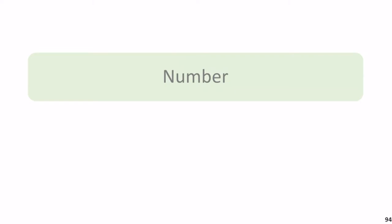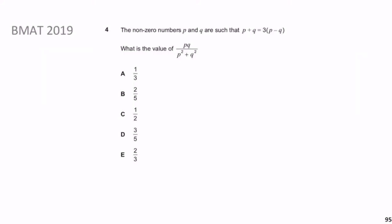Let's look at this question from BMAT 2019. There are always quite a few questions each year from the math section. Question 4: non-zero numbers p and q are such that p + q = 3(p − q). What's the value of pq over p² + q²? Pause the video, give yourself a minute, and then we'll go through the solution.